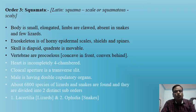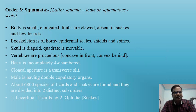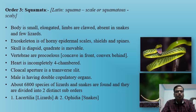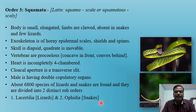Vertebrae are procoelous — concave in front and convex behind. The heart is incompletely four-chambered. The cloacal aperture is a transverse slit. Males have double copulatory organs (hemipenes). There are about 6,800 species of lizards and snakes, divided into two suborders: Lacertilia (all lizards) and Ophidia (all snakes).